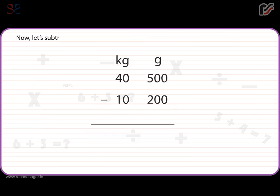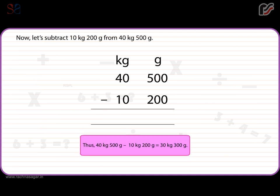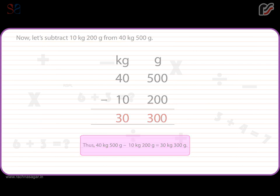Now, let's subtract 10 kilograms 200 grams from 40 kilograms 500 grams. Thus, 40 kilograms 500 grams minus 10 kilograms 200 grams is equal to 30 kilograms 300 grams.